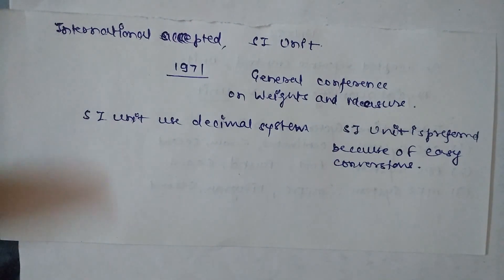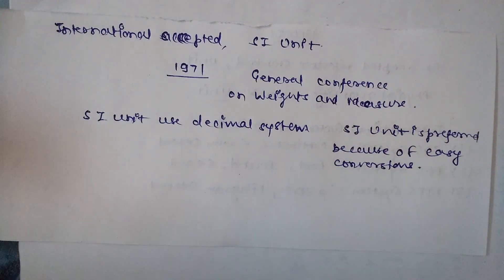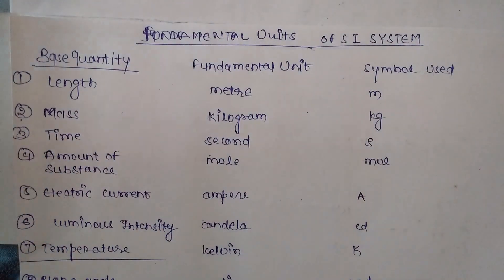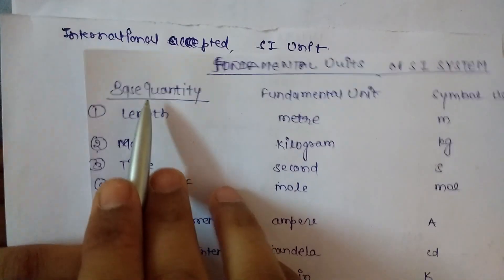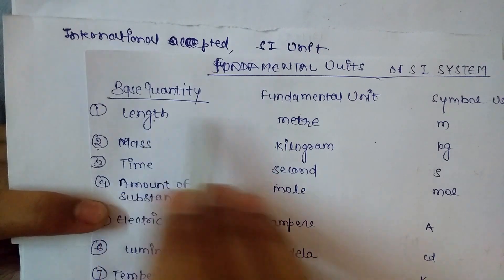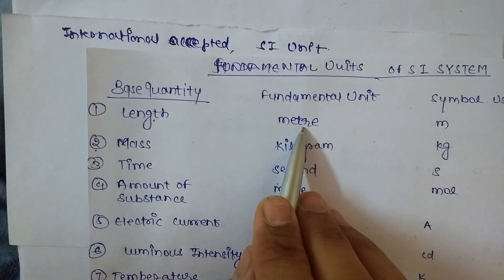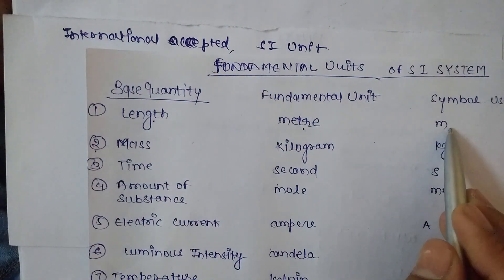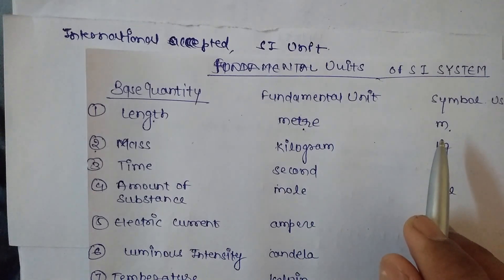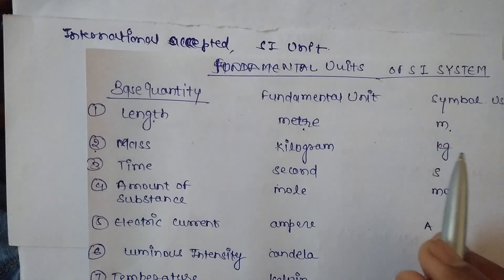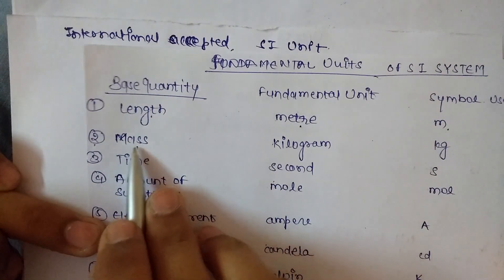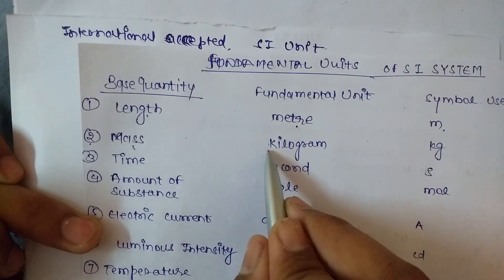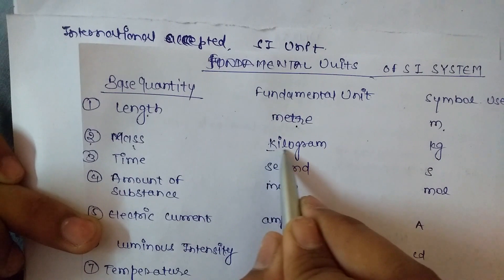There are some fundamental units or base units in the SI unit system. The first unit is length, whose fundamental unit is meter with symbol M. The second base quantity is mass, with fundamental unit kilogram and symbol kg.